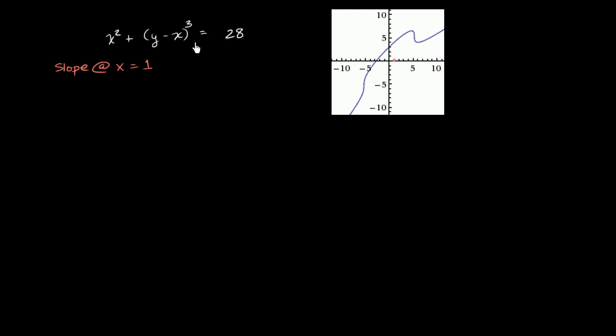So when x is equal to 1, our relationship right over here becomes 1 squared, which is just 1, plus (y - 1) to the third power is equal to 28. Subtract 1 from both sides. You get (y - 1) to the third power is equal to 27. Take the cube root of both sides. You get y - 1 is equal to 3. Add 1 to both sides. You get y is equal to 4.